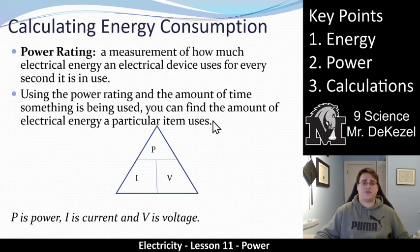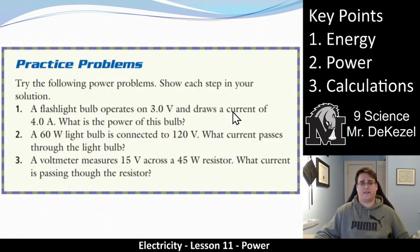We have a triangle here for us to write down and memorize. So we can calculate power, calculate a power rating if we know the current and we know the voltage. So a power rating is a measurement of how much electrical energy an electrical device uses for every second it is in use. Using the power rating and the amount of time if something is being used, you can find out the total amount of power that is being used for that particular device, that particular item. So let's show you how to do these calculations. We're going to do one example of each here.